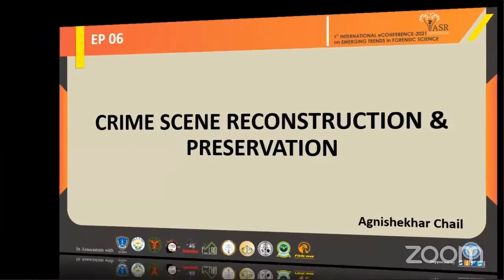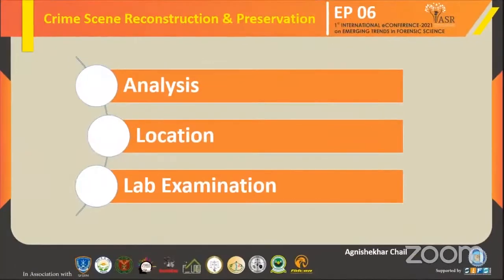First, let us understand what reconstruction is and why it is done. Crime scene reconstruction is basically a process of determining or eliminating the events that occurred in a crime through the analysis of the crime scene, the location of the physical evidences, and further lab examination of those evidences.